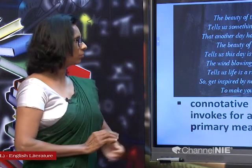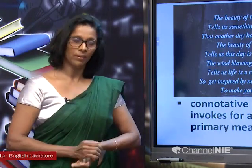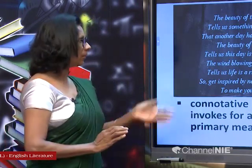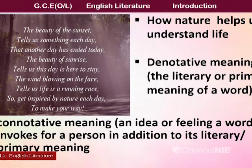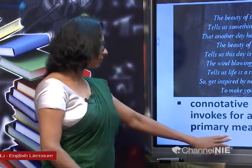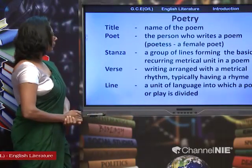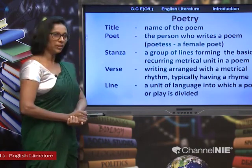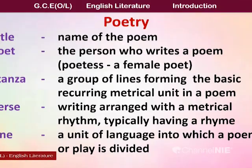Likewise, I gave two meanings to sunset and sunrise. We can take many other words — with symbols, with all these sounds coming in the poem and with many other literary devices, we are going to analyze the works of authors and writers. So let's see what we are going to do next: Poetry. Does the title mean the name of the poem? Was there a title for the poem I read? There wasn't. Then, the poet — the person who writes a poem. Sometimes you may see the word poetess for a female poet, but basically we say poet. Poet may be female or male.